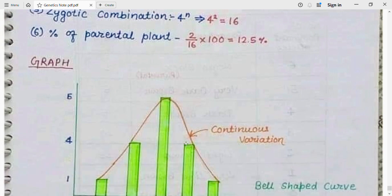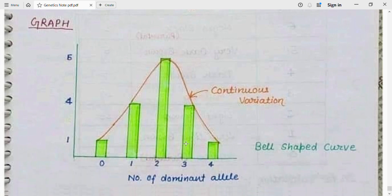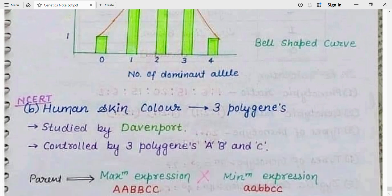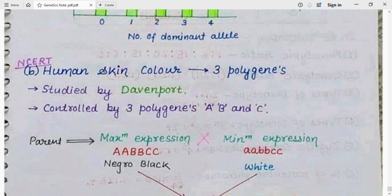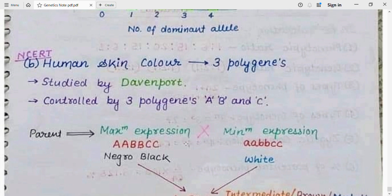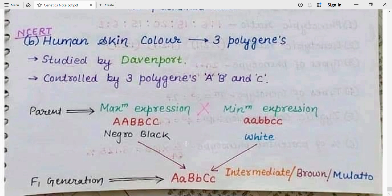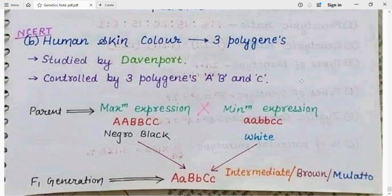Polygenic inheritance shows continuous variation in which each phenotype is present. Another example is human skin color, controlled by three polygenes (A, B, and C), studied by Davenport in crosses between African Negroes and Europeans. When crossing maximum-expression individuals with white, the offspring produce intermediate brown color (mulatto). In conclusion, polygenic inheritance is a type of inheritance in which many genes collectively control a single character.